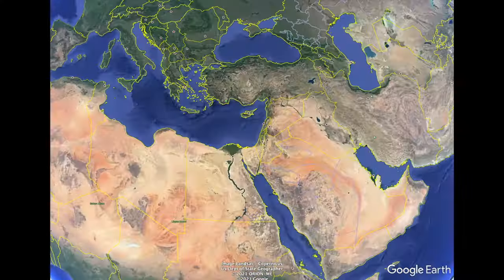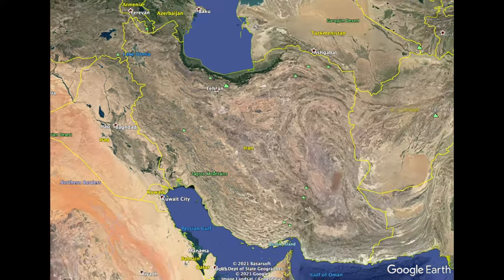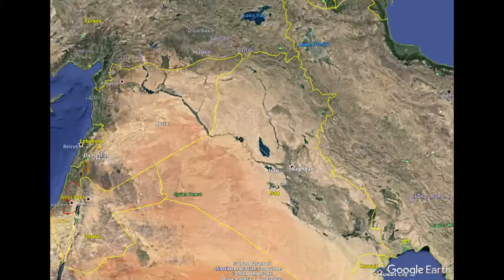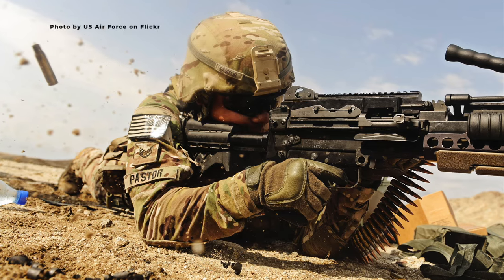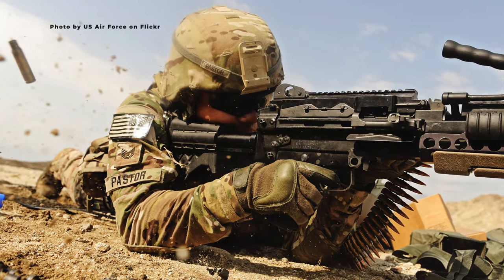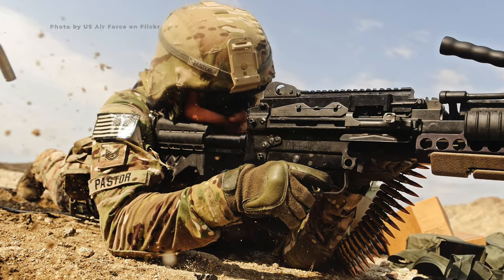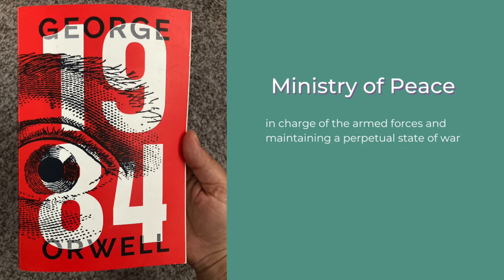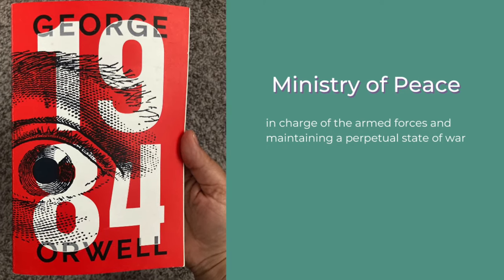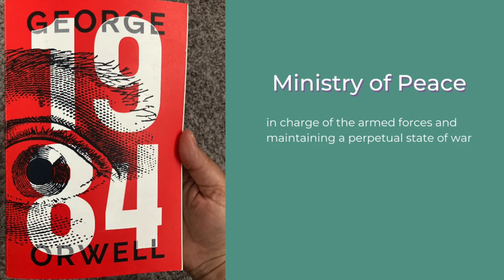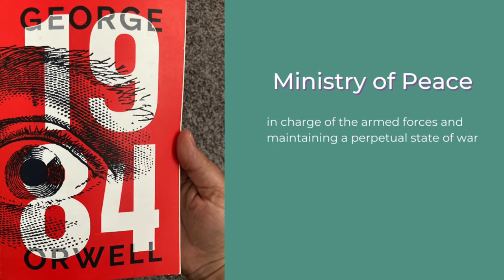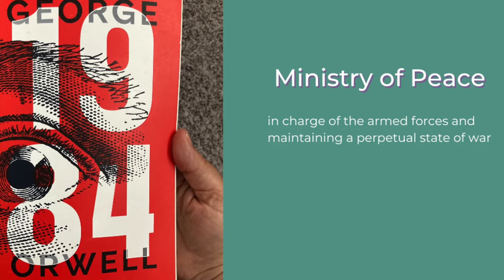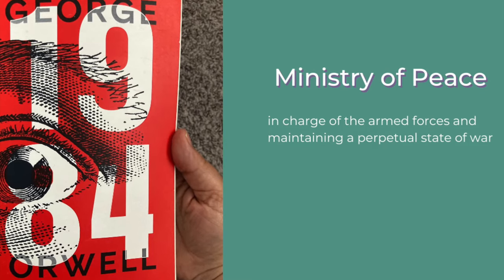At the time of the recording of this video, the U.S. is involved in three wars, none of which are on its own soil. How is it possible that the reason for all of this military conflict is defense? This naming of a government department the exact opposite of what it does is eerily similar to how ministries are named in Orwell's 1984. For example, the Ministry of Peace is in charge of the armed forces and maintaining a perpetual state of war.